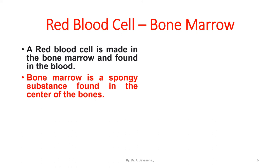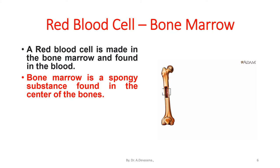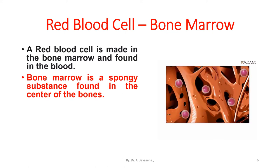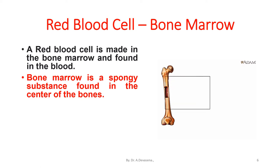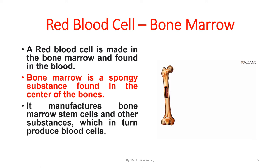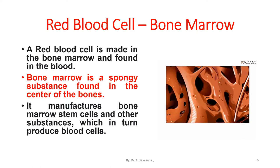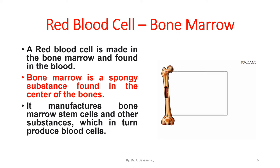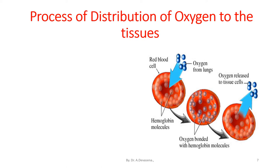The bone marrow is a spongy substance found in the center of the bones. It is a spongy substance. Inside the bone marrow, the red blood cells have been generated. It manufactures bone marrow stem cells and other substances, which in turn produce blood cells.